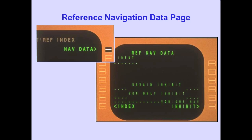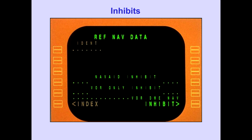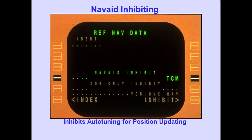Pushing the Navigation Data Line Select key on the Initialization Reference Index page displays the Reference Navigation Data page. The NavAid Inhibit Line, VOR Only Inhibit Line, and VOR DME Navigation Lines are used to select navigation radios to be inhibited from auto-tuning for FMC position updating. Entering a NavAid Station Identifier on the left or right side of the NavAid Inhibit Line inhibits auto-tuning of that station for FMC position updating.